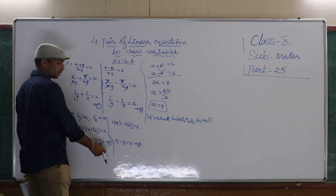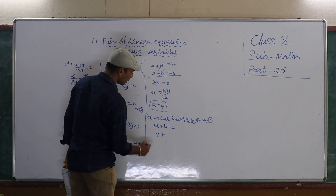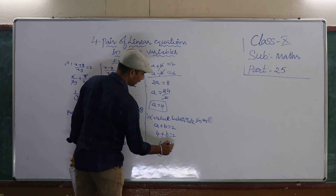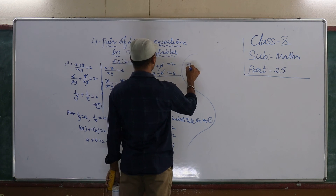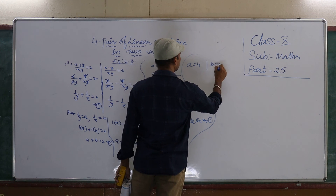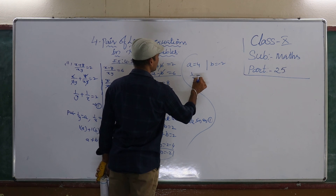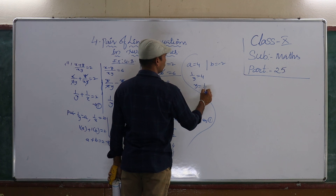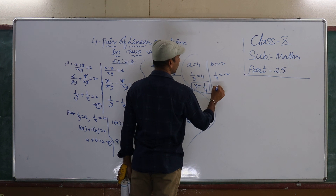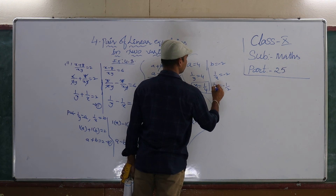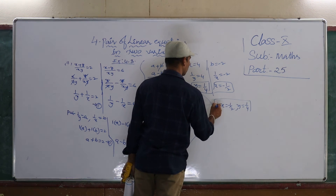Then, from equation 1 and 2: a plus b is equal to 2, a minus b is equal to 6. We don't need to multiply, because the coefficients of a are both equal. So, minus b plus b cancel. Then, 2a is equal to 8. Then a is equal to 8 by 2, which is 4. A value is 4. Then, a value substitute in equation number 1: a plus b is equal to 2. A value is 4, so b is equal to 2 minus 4, b is equal to minus 2. After getting a and b: a is equal to 4, b is equal to minus 2. A is nothing but 1 by y is equal to 4. Cross multiplication: y is equal to 1 by 4. Then, b is nothing but 1 by x. Cross multiplication: x is equal to minus 1 by 2. Therefore, x is equal to minus 1 by 2 and y is equal to 1 by 4. These are the values.